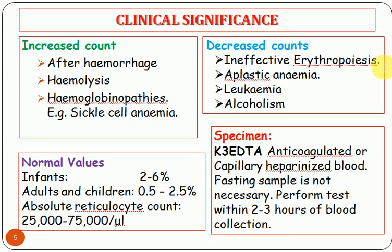Decreased reticulocyte count is also seen in aplastic anemia — a condition where there is a defect in the bone marrow — leukemia, and alcoholism. Normal values: for infants, 2–6%; for adults and children, 0.5–2.5%. The absolute reticulocyte count is 25,000 to 75,000 per microliter (per cubic millimeter).